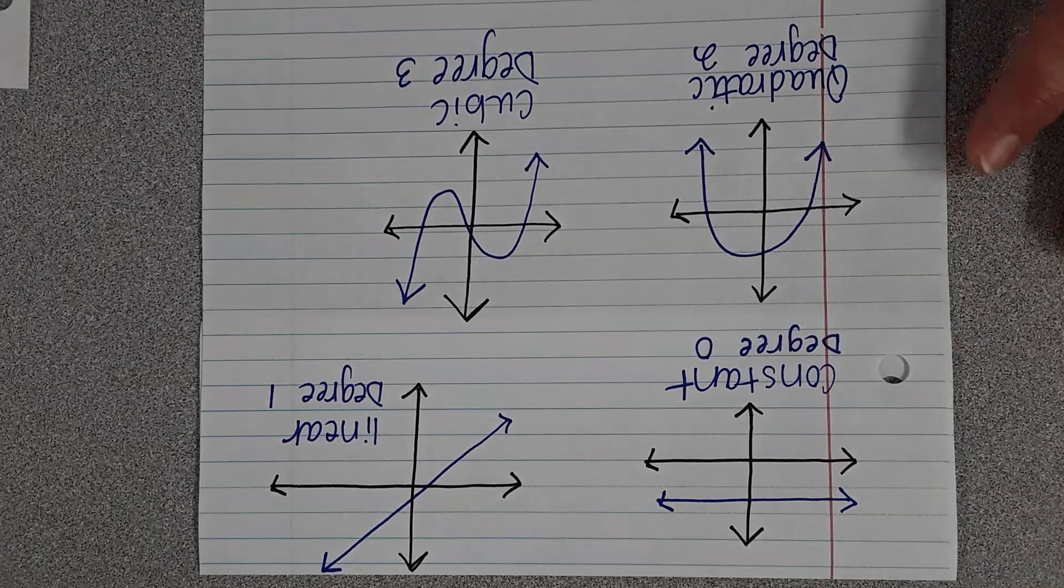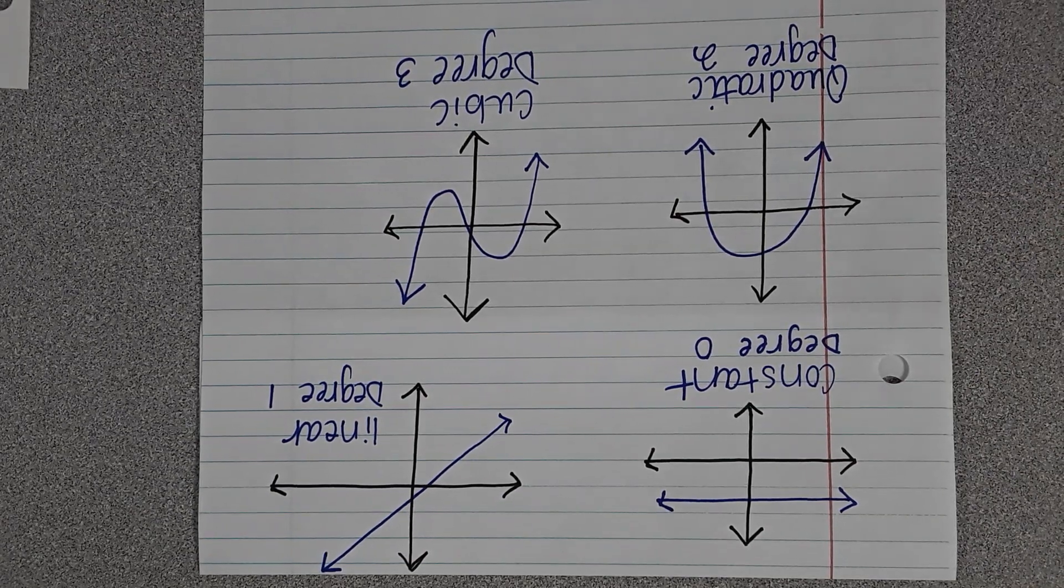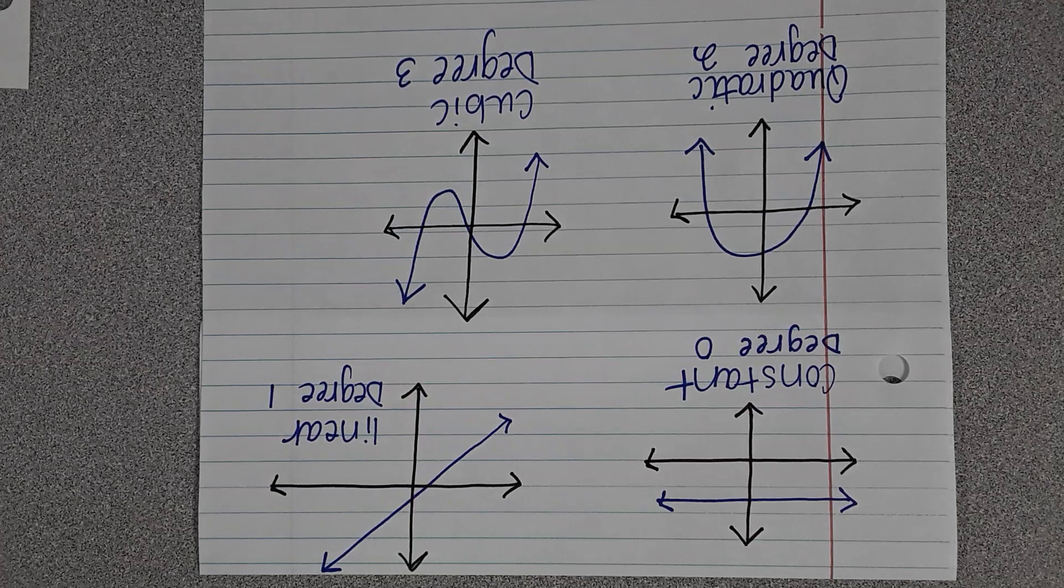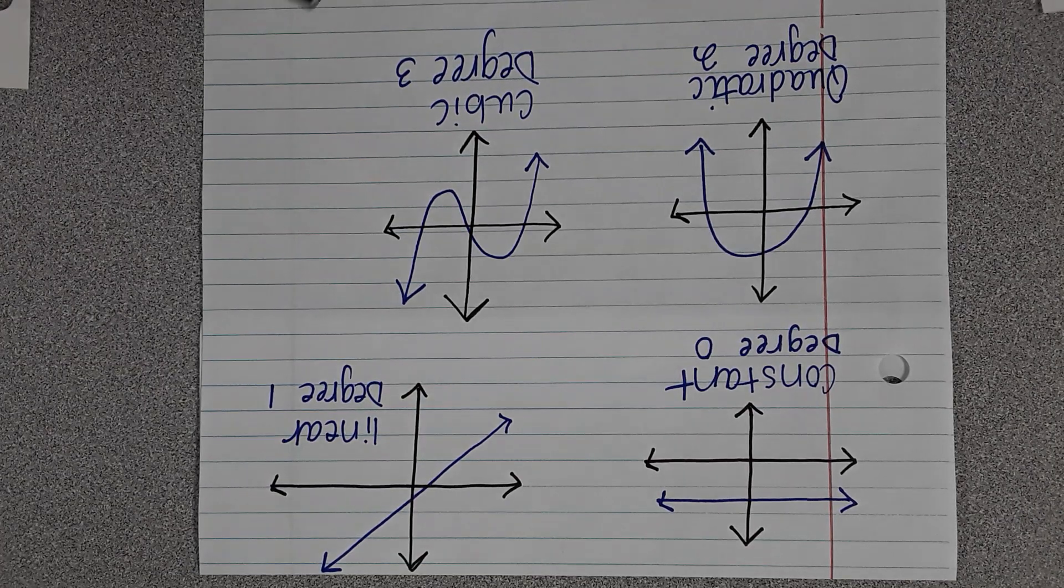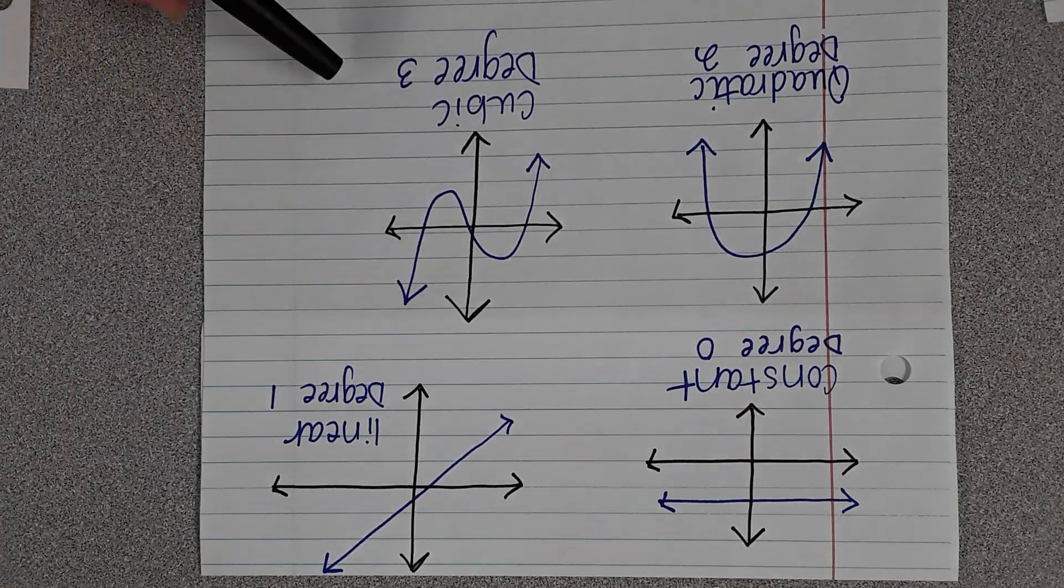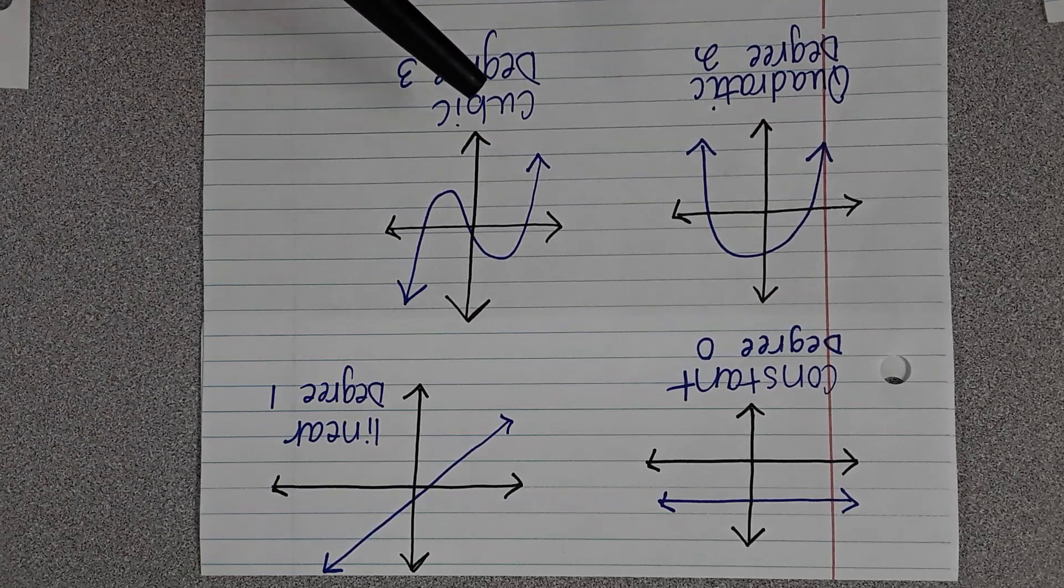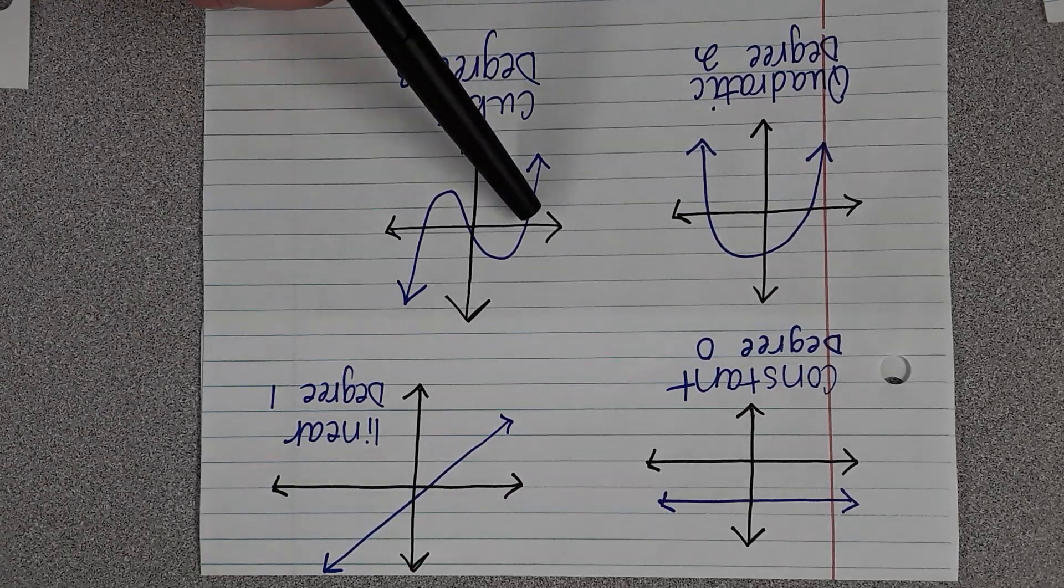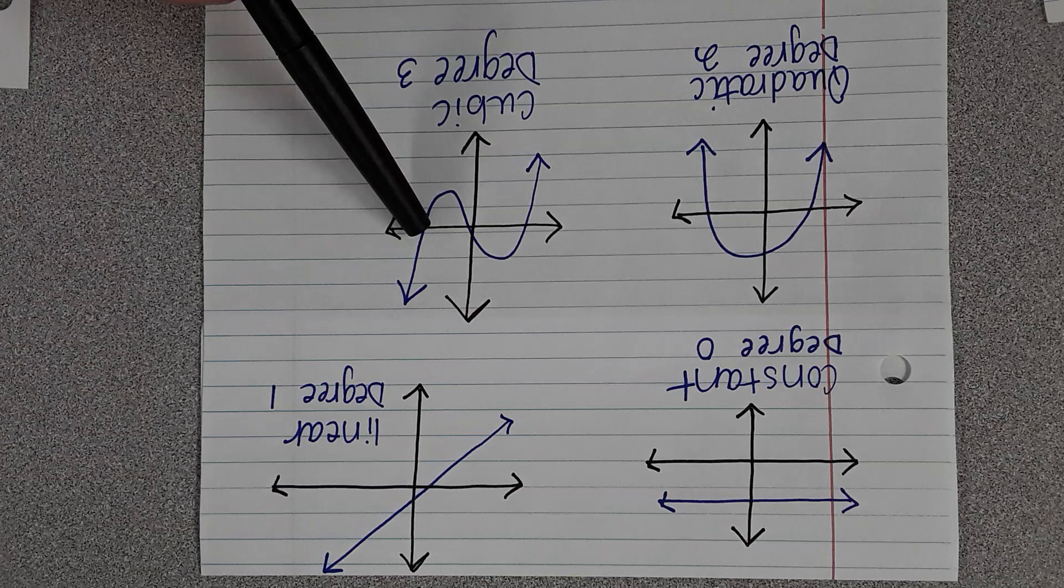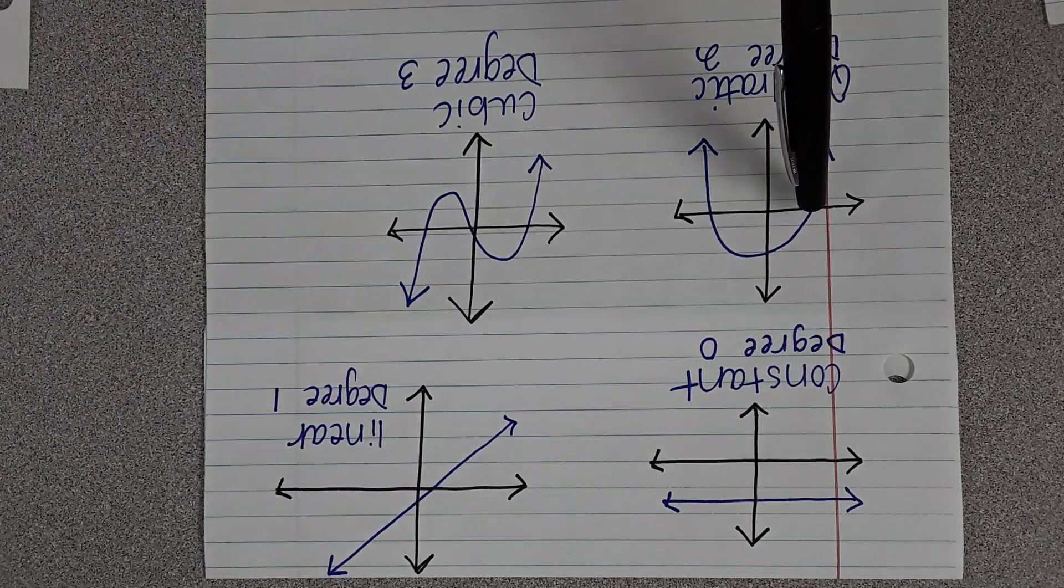A cubic is a polynomial with a degree of 3, so the largest exponent is 3. For a cubic, the end behavior is if it starts down, it will end up. It should cross the x-axis in three places: 1, 2, 3. A quadratic usually crosses the x-axis in two places.